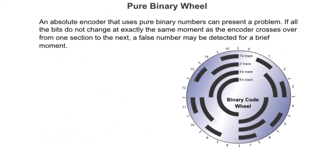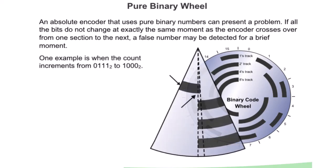Pure binary wheel. An absolute encoder that uses pure binary numbers can present a problem. If all the bits do not change at exactly the same moment as the encoder crosses over from one section to the next, a false number may be detected for a brief moment.